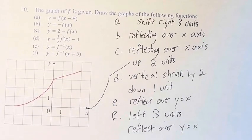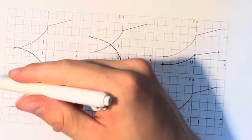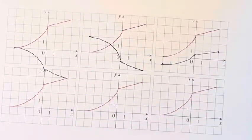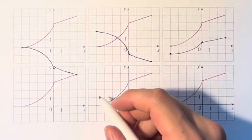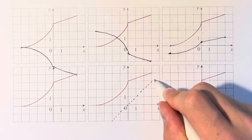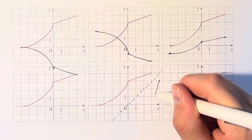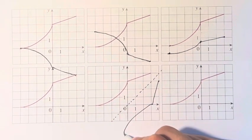For part E, we are told to reflect over the line y equals x. I'm going to ignore this bleeding from the previous graph. What we can do is take the line y equals x, which is right here, and create a reflection over it.